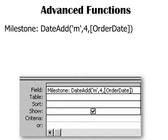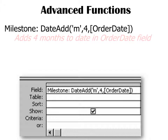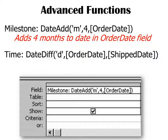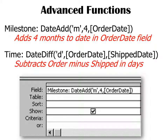Here's more advanced criteria using functions. You can create a new field by typing a name followed by a colon — anything after the colon is a function. For example, using DateAdd with 'M' for months, I can add 4 months to the order date, creating a new calculated field. In another case, a new field called 'Time' can use DateDiff to find the difference between the order date and the ship date in days — showing how many days have elapsed since the order was placed.